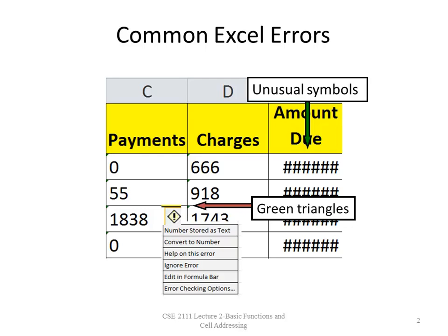Many times when you're working in an Excel spreadsheet you may see errors. You may see unusual symbols — for example, pound signs in column E. These symbols just mean that the cell is not big enough to fit the contents, so you have to make the cell wider. You can do that by dragging between columns D and E, or by double-clicking between the D and E column headings at the top.